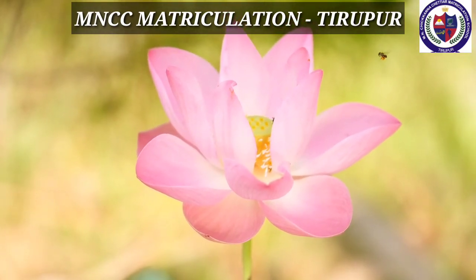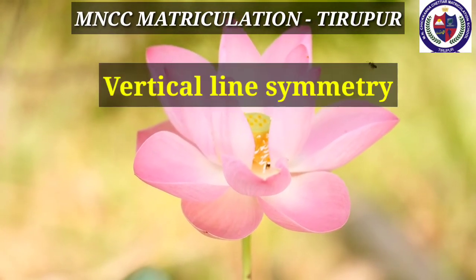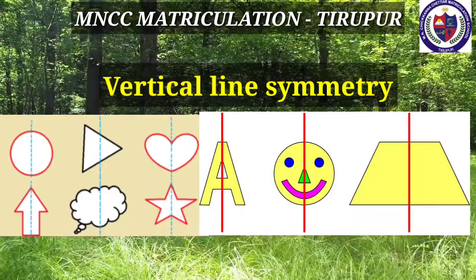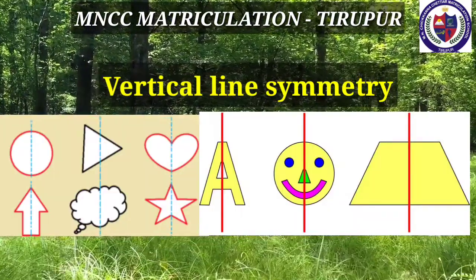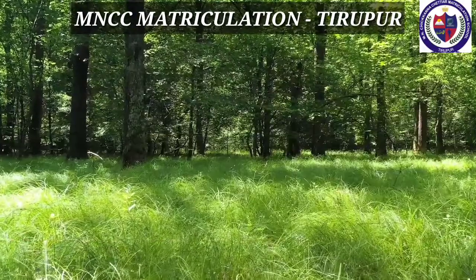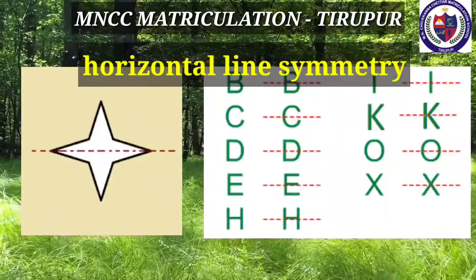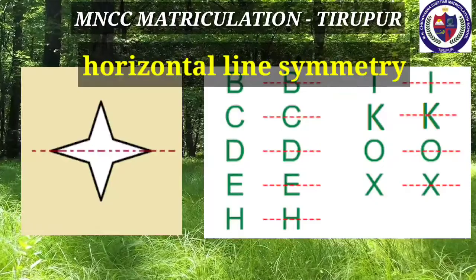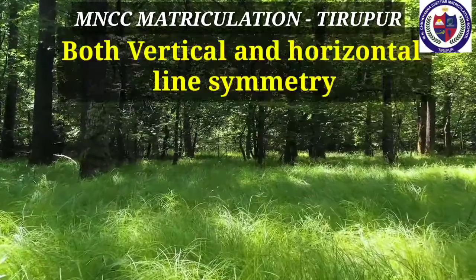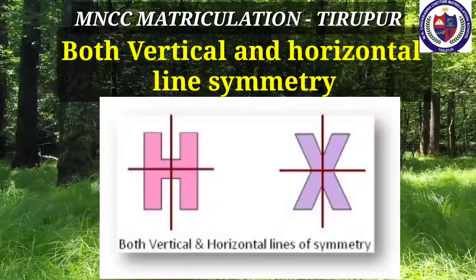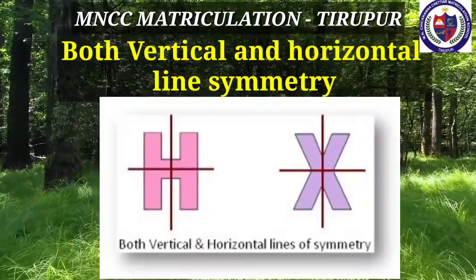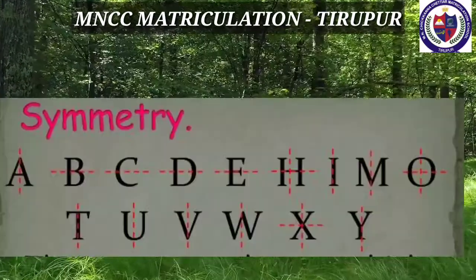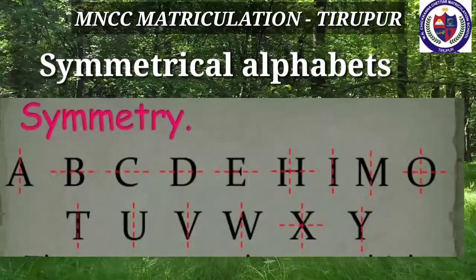There are two lines used in symmetry. The first one is the vertical line — if you cut the given image with this line, it is called the vertical line. The second one is the horizontal line — if you cut the image in the center, it is called the horizontal line. Sometimes we can use both vertical and horizontal line symmetry.